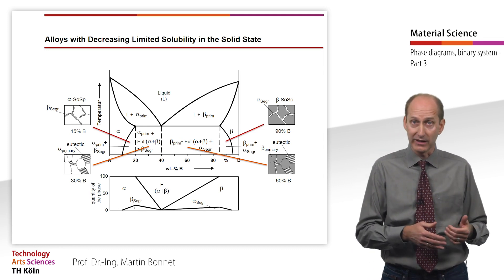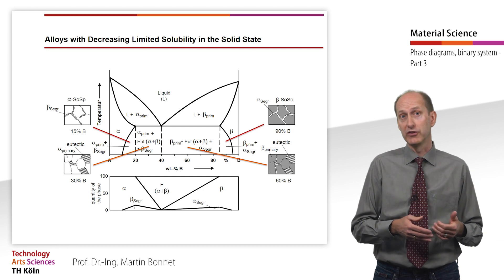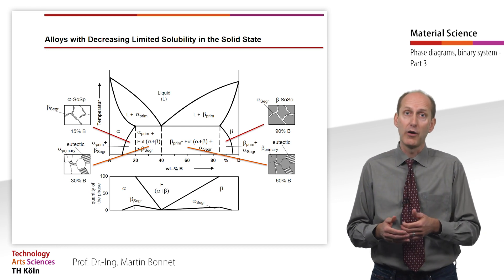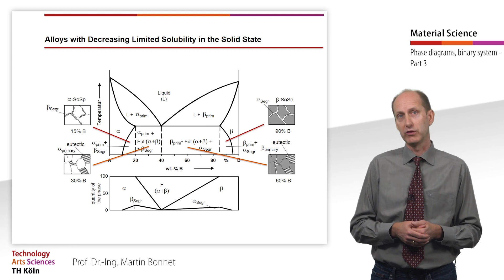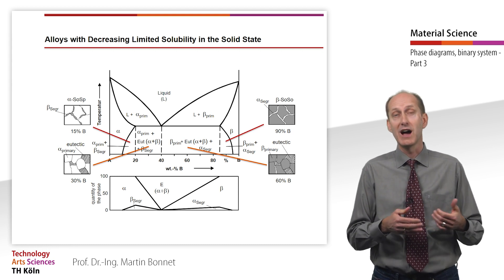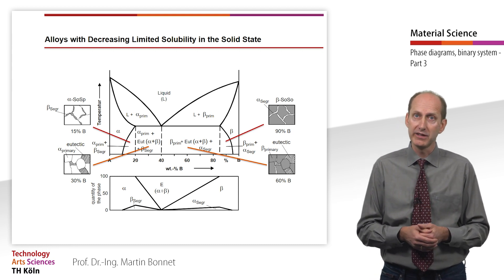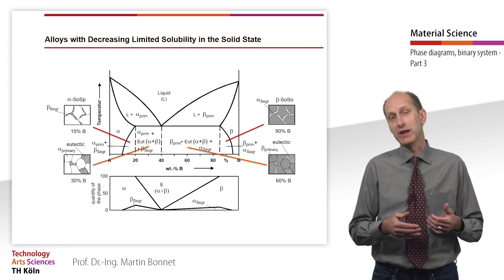Above the eutectic, the situation is reversed as the solubility of component A in component B decreases and accordingly alpha segregate precipitates out at the grain boundaries.